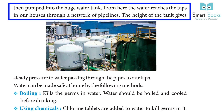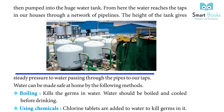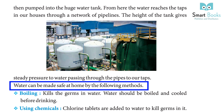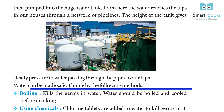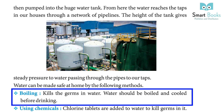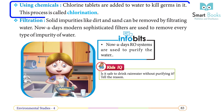The height of the tank gives steady pressure to water passing through the pipes to our taps. Water can be made safe at home by the following methods: Boiling — kills the germs in water; water should be boiled and cooled before drinking. Using chemicals — chlorine tablets are added to water to kill germs; this process is called chlorination.